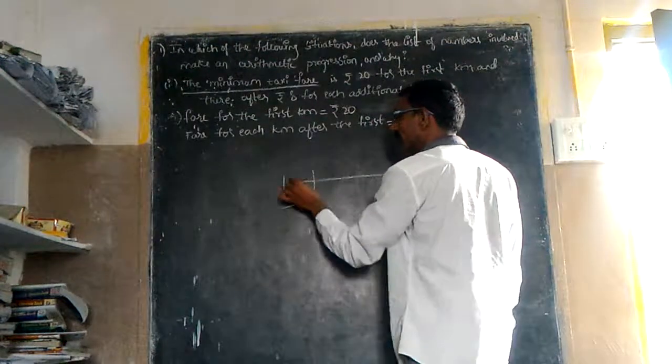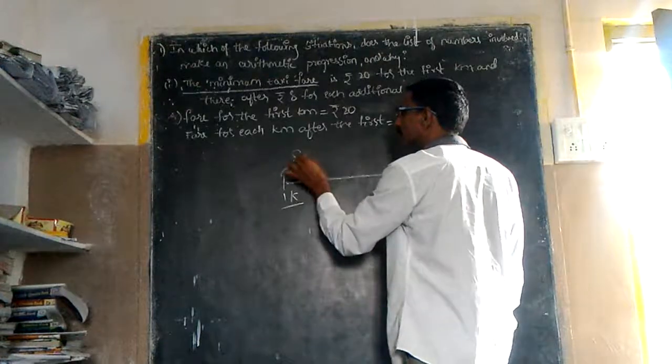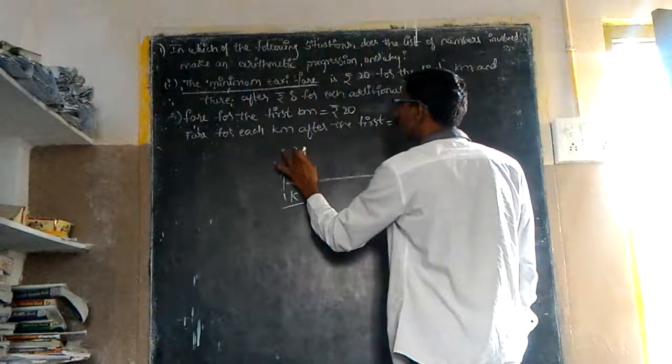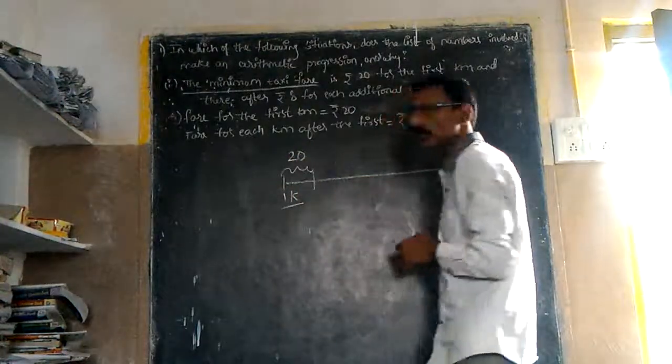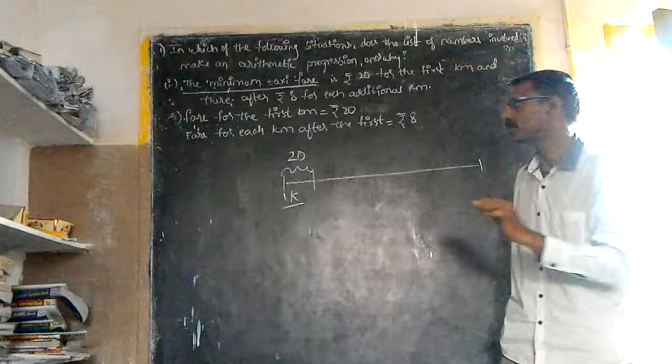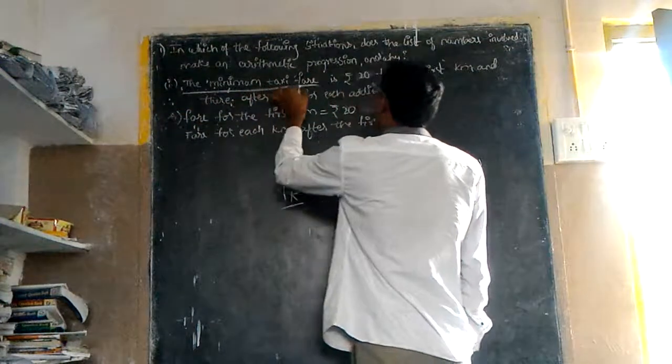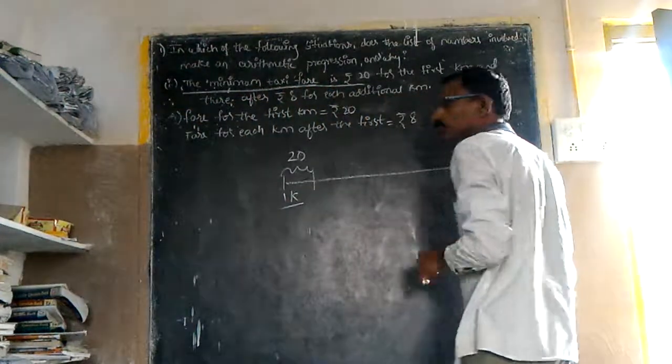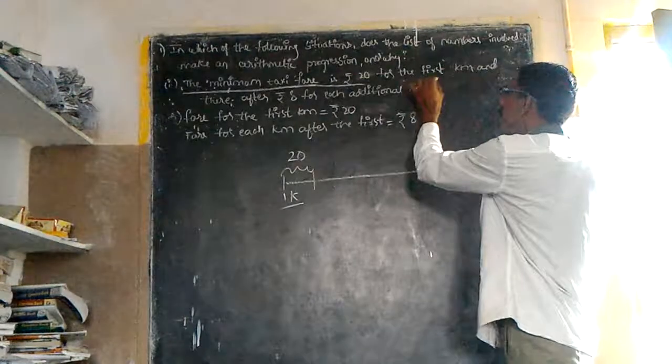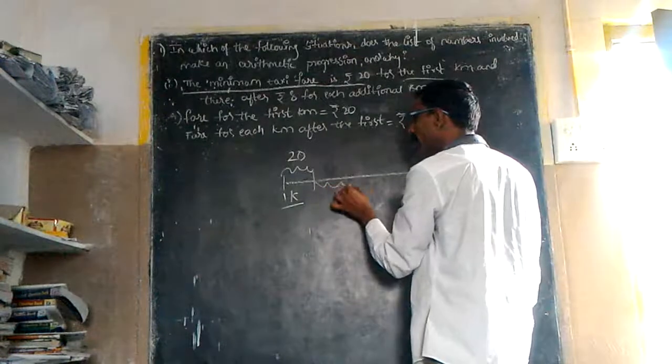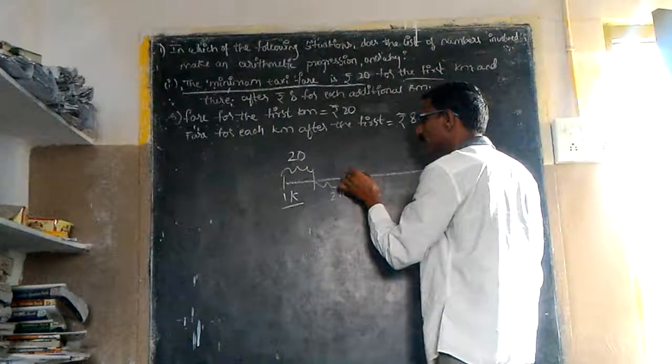This is first kilometre, 20 rupees. The minimum taxi pay is 20 rupees per first kilometre. You go to the additional kilometre, that is the second kilometre.